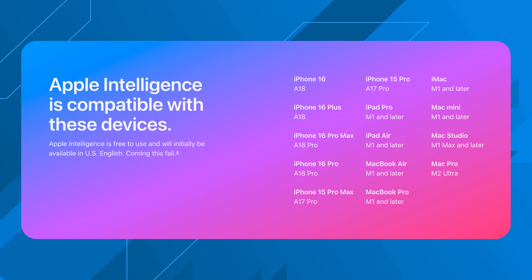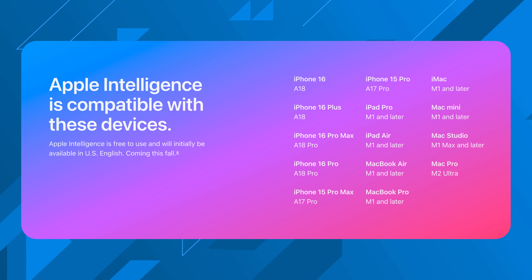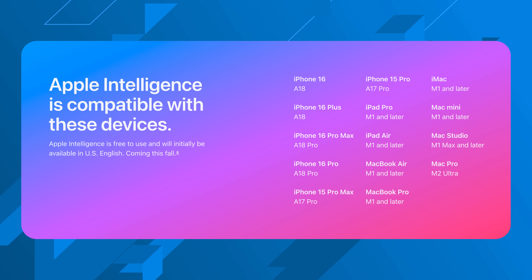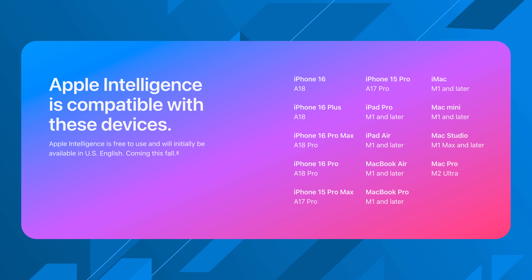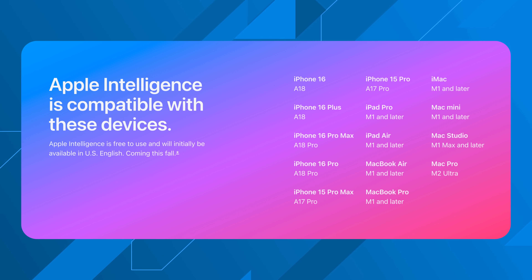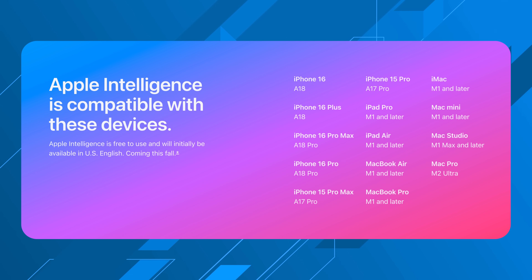Before we get started, in terms of iPhones that will be supporting Apple Intelligence, you need to be on an iPhone 15 Pro or Pro Max or newer, so that includes all the iPhone 16 lineup and those 15 Pros and 15 Pro Maxes. On the iPad side, you need an M-powered iPad or newer, or the A17 iPad mini that just released. Finally, any Mac with an M-series chip will be able to support Apple Intelligence. Now let's go to the first one, which has to do with camera control.